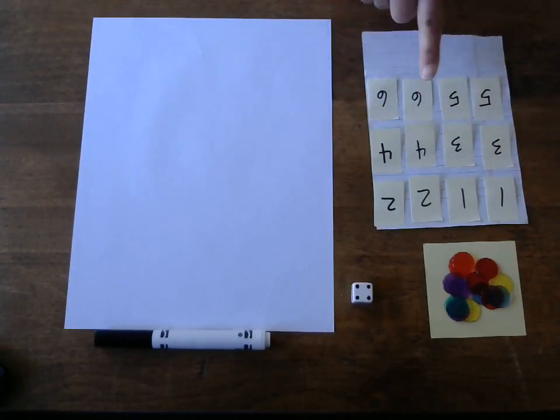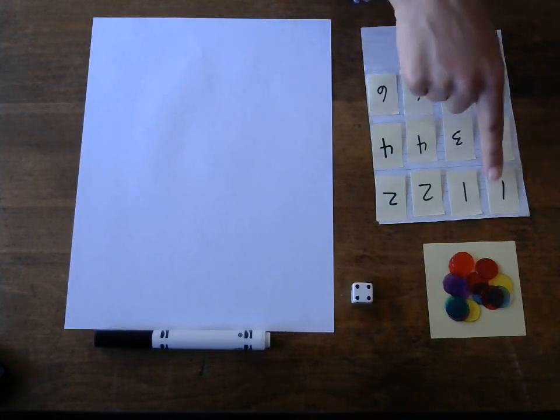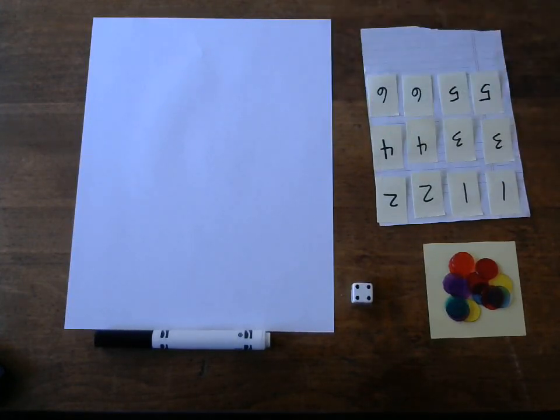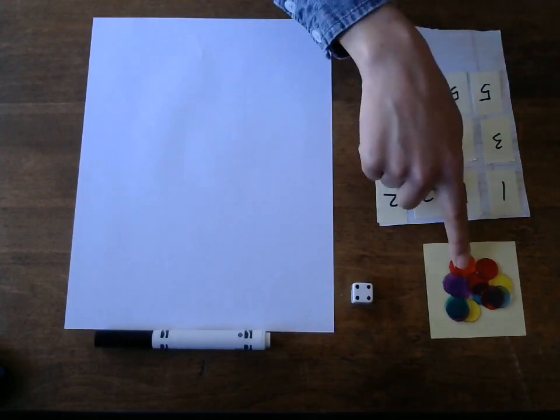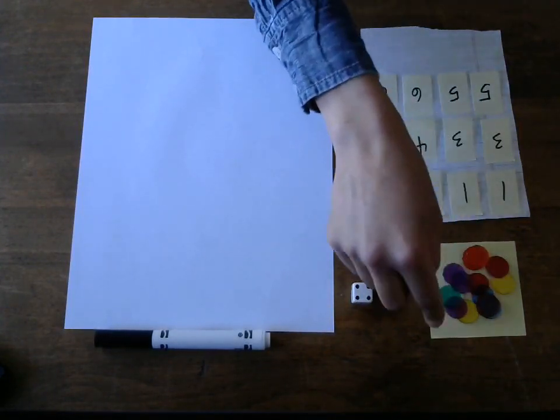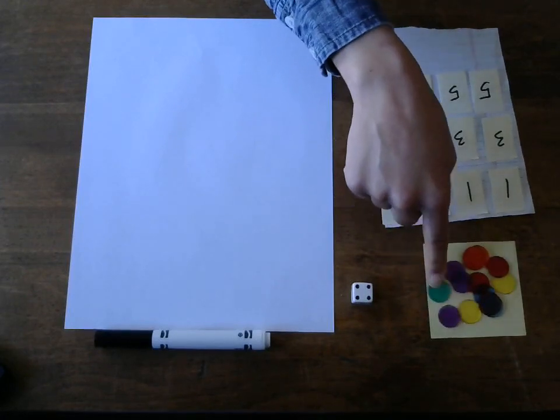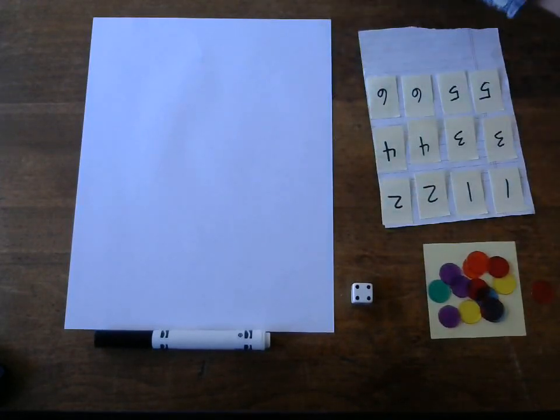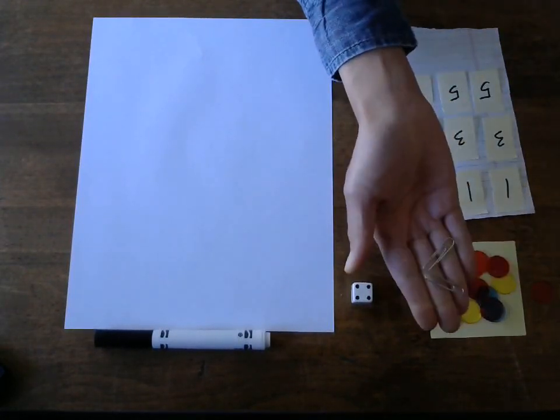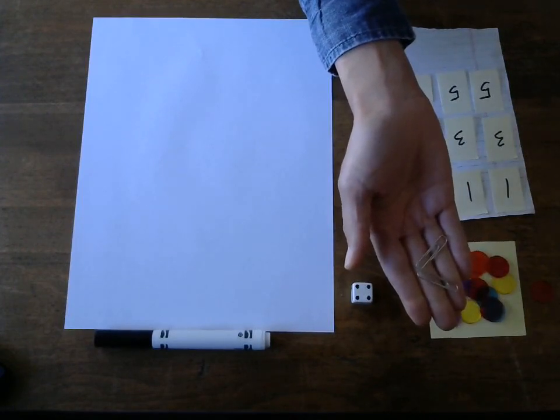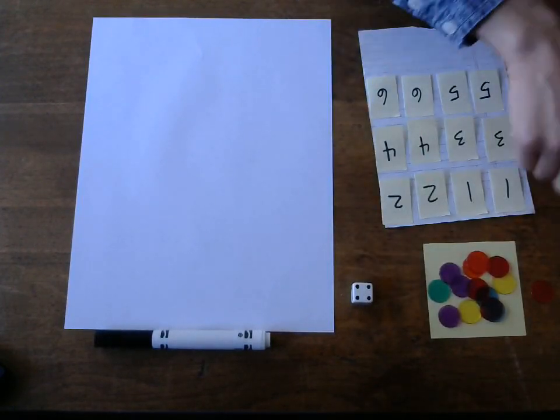the numbers one through six, so one, two, three, four, five, and six on little pieces of paper. I made two of each. And I'll tell you why in a little bit. And then you need 10 objects. And I have these counters that we use at school, but anything would work. Even I found some paper clips. 10 paper clips would be fine. 10 pennies would also work well.